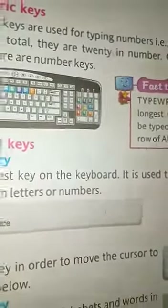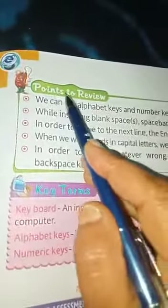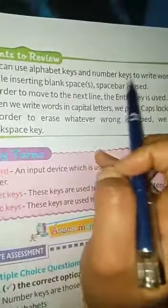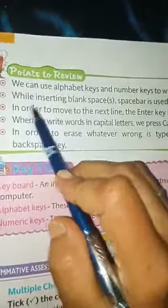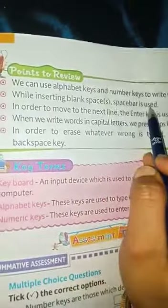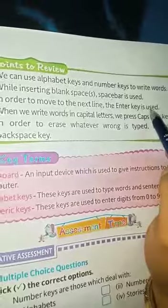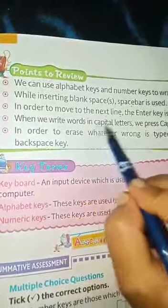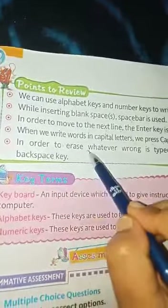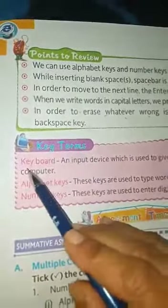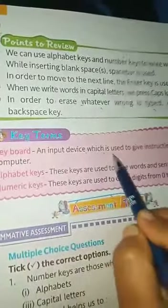Points to review: we can use alphabet keys and number keys to write words. While inserting a blank space, the Space Bar is used. In order to move to the next line, the Enter key is used. When we write words in capital letters, we press the Caps Lock key. In order to erase whatever was wrongly typed, we use the Backspace key.